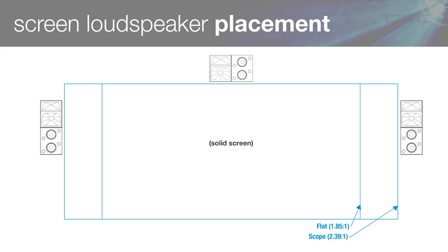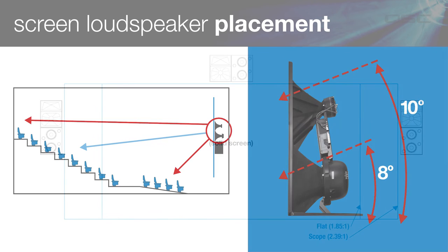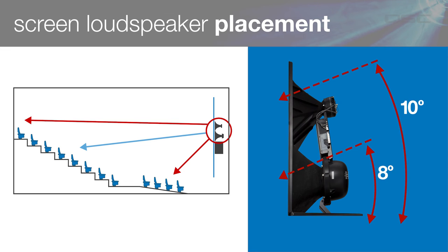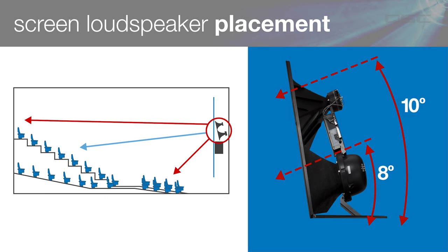In every case, it is critical that the screen channel loudspeakers are identical models. In a typical room, when placed properly at five-eighths to two-thirds height behind the screen, you'll get the best coverage possible of the seating area without spending a lot of extra time aiming the loudspeakers. This ensures good localization of the sound to the correct area of the screen. If the floor is less steeply sloped or even flat, some additional downward tilt will be required.